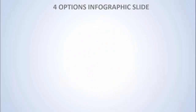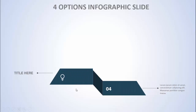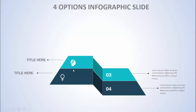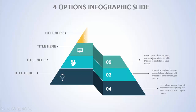In today's tutorial I'm going to show you how to create a four pyramid options infographic slide in PowerPoint. When I click it will show me the first option — here you can add the title, the icon, the option number, and the detailed text. When I click again it will show me the second option, then the third option, and the fourth option.